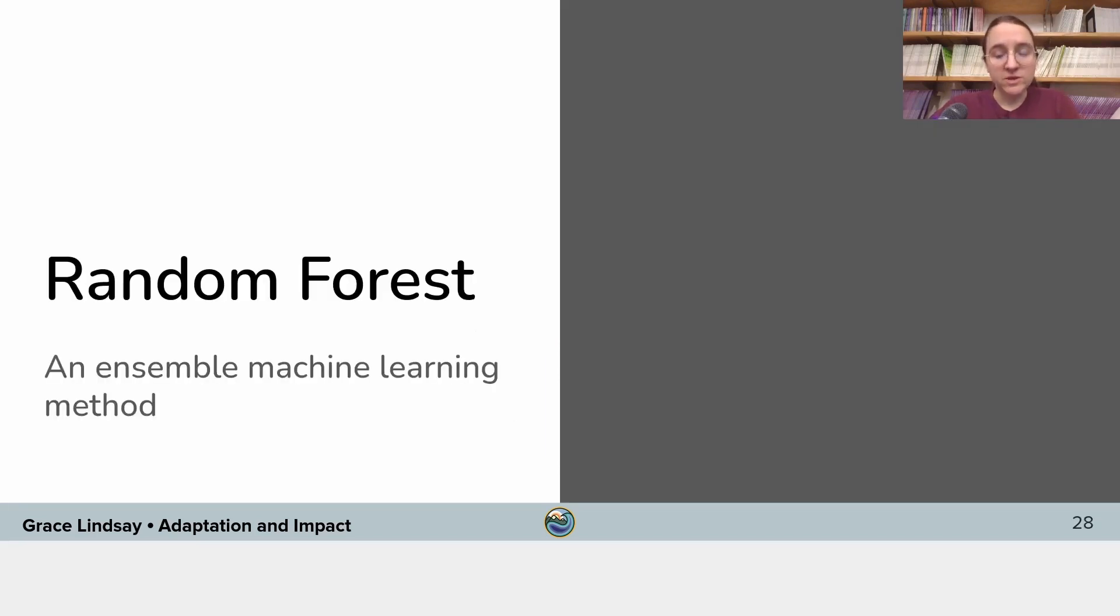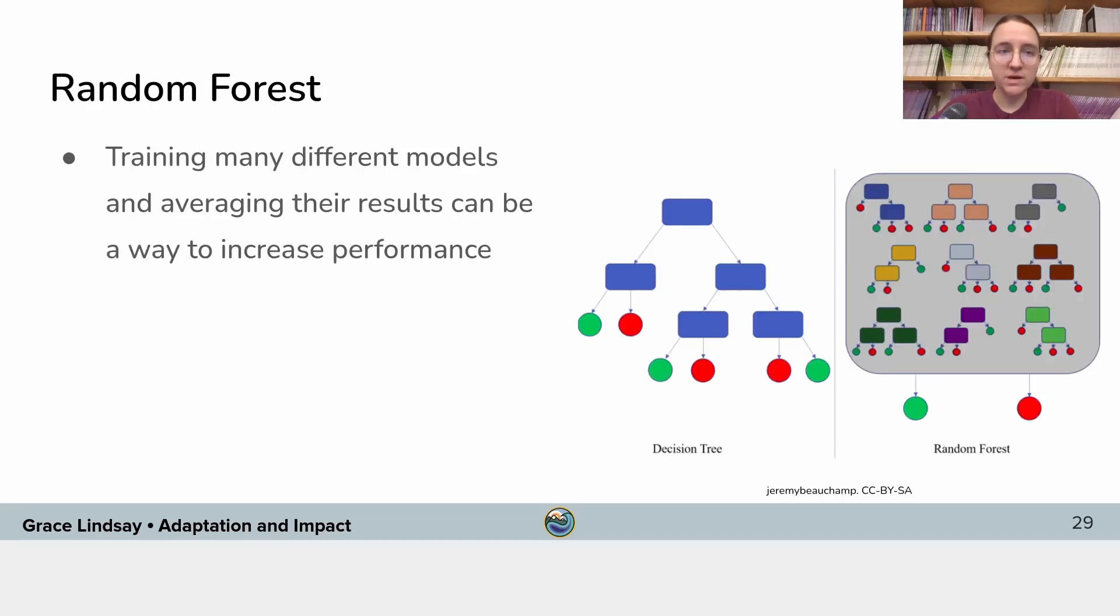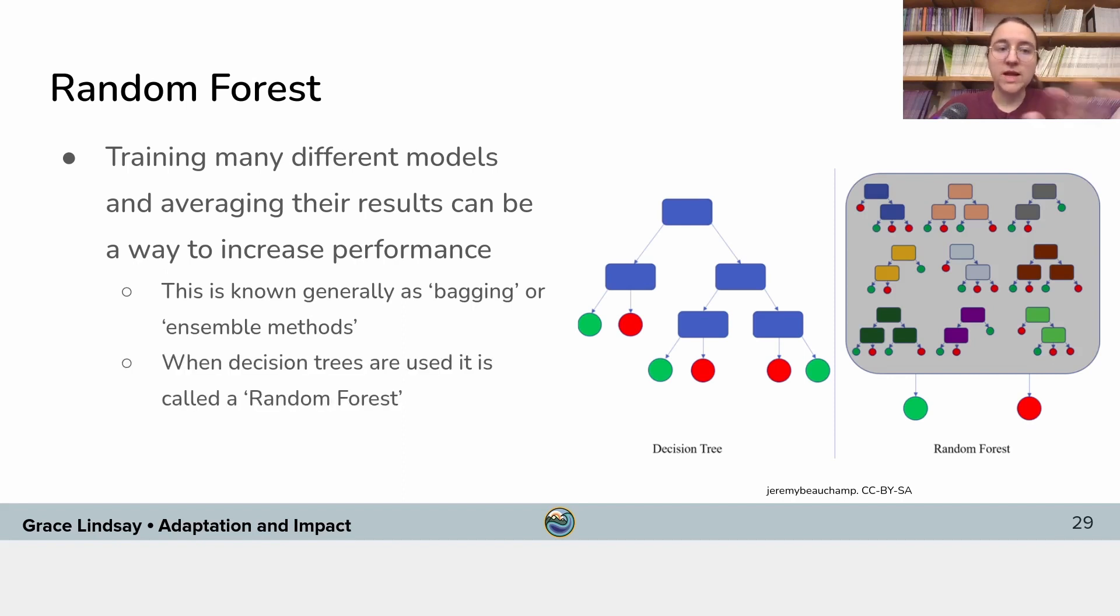So now we understand what an individual decision tree is. Let's talk about what a random forest is. So a random forest model is basically a collection of decision trees. So when you combine a bunch of different models together, it can be a way to get better performance. So when you do this, you can average the output of multiple different individual models to give you an overall output that might be more accurate. So this is known as bagging or an ensemble method in machine learning, and you can do it with many different types of machine learning models. When you do an ensemble of decision trees, that's called a random forest.